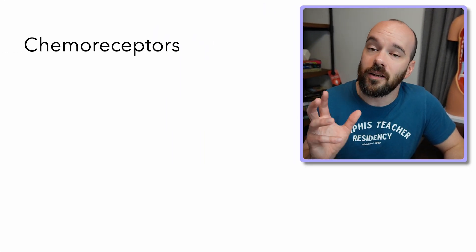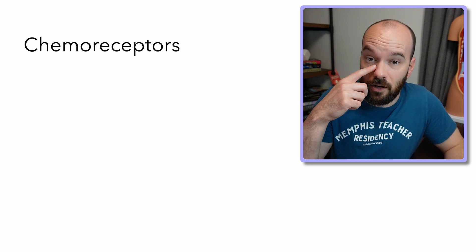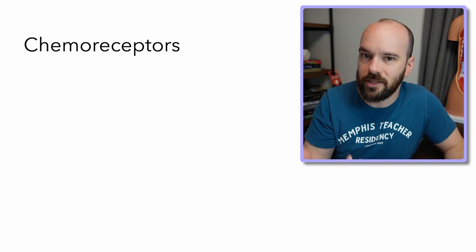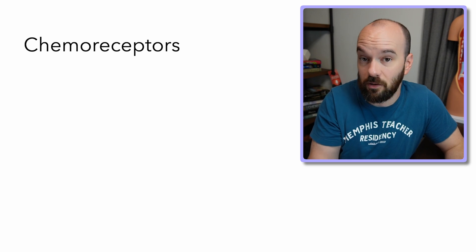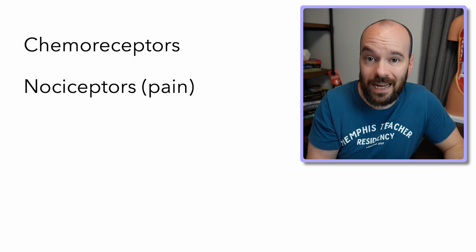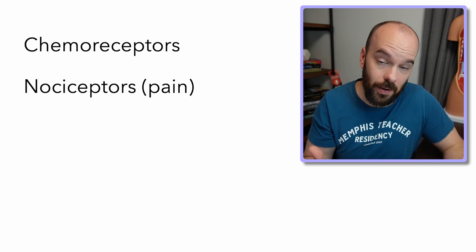Before we start adding skin receptors to our diagram, let's look at the different types of receptors in the body. There are five types based on what they detect. First, we have chemoreceptors, which detect chemicals — an example would be in our nose, where molecules from the air are detected and a signal is sent to the brain identifying that smell. Next are nociceptors, or pain receptors, which detect different types of damage happening to parts of our body, like our skin.